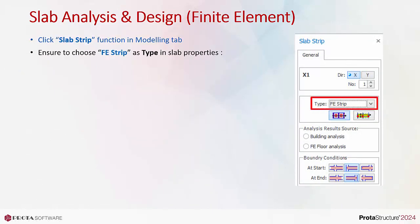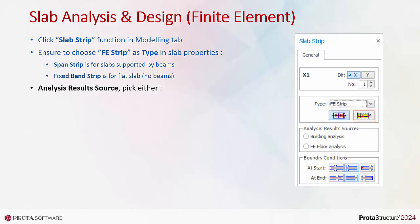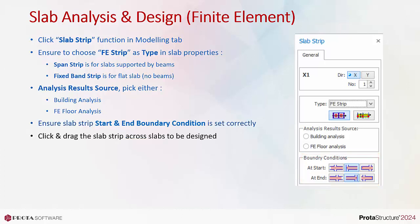Ensure to choose FE strip as the type in slab properties. Span strip is for slabs supported by beams; fixed band strip is for flat slabs with no beams. Under analysis result source, pick either building analysis or FE floor analysis. Ensure the slab strip start and end boundary condition is set correctly.